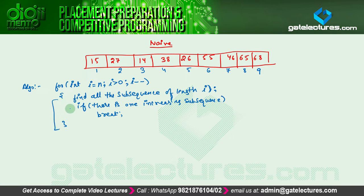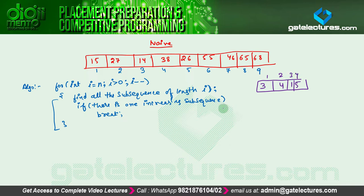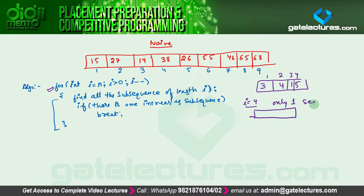Let me explain this algorithm with an easier example. Assume we have the sequence 3, 4, 1, and 5, which has a total length of 4. According to this algorithm, we first take i = 4, meaning we find all subsequences of length 4. There is only one such subsequence: 3, 4, 1, and 5. We check whether it is in increasing order — it is not — so this cannot be a solution.